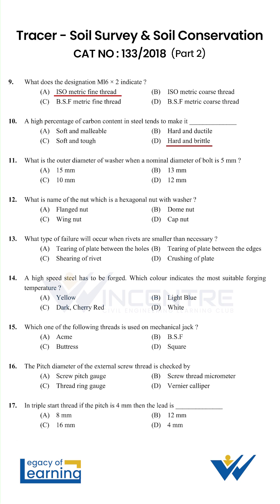What is the outer diameter of washer when a nominal diameter of bolt is 5 mm? Option B: 13 mm. What is the name of nut which is a hexagonal nut with washer? Option A: flanged nut.